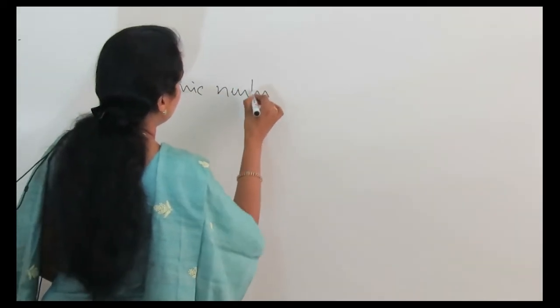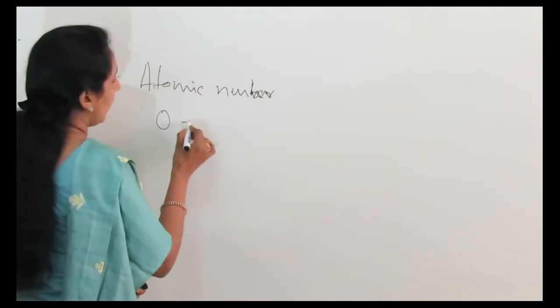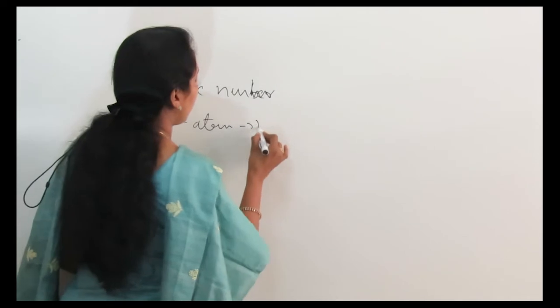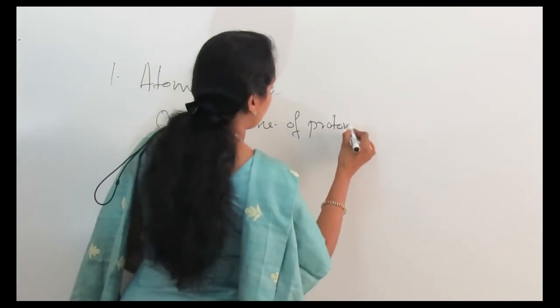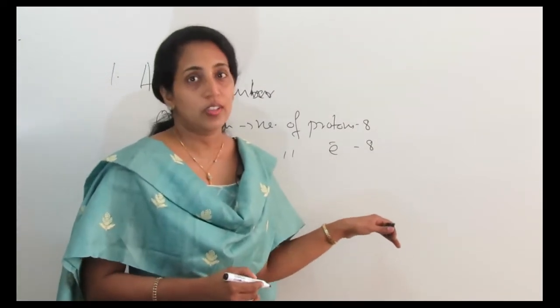Atomic number is nothing but the number of protons or number of electrons in a neutral atom. For example, the oxygen atom — what is the atomic number of oxygen? The atomic number of oxygen is 8. That means the proton number is 8, and in a neutral oxygen atom, the number of protons equals 8 and the number of electrons is also 8.